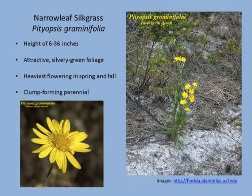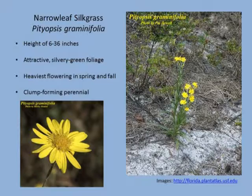Narrow leaf silk grass — Pityopsis graminifolia — is another scrub plant. It has very narrow, long leaves and is a lower-growing herbaceous plant. The foliage is silvery green, which is a nice accent — you could plant it with other things with a standard glossy green color and use the silver to accent it. And then of course the bright yellow flowers it produces. If you allow it room to spread, it's a clump-forming wildflower that will germinate from seed.